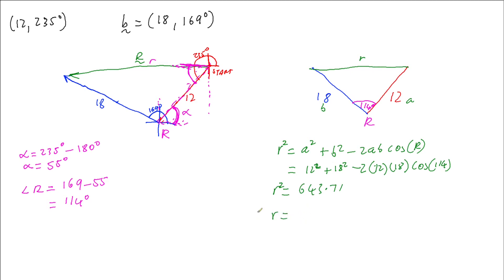So that's going to give us an R, well an R squared I should say, of 643.71 and then square rooting that we get an R to be 25.37 whatever units we're working in. So now I have the length of this line, I now need its bearing.